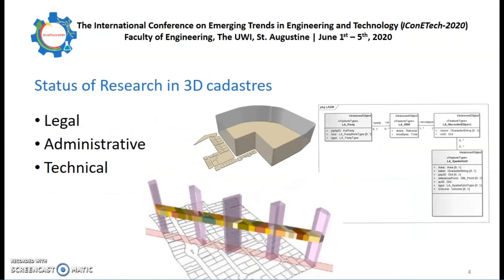Research on 3D cadastres may be separated into three streams: legal, administrative, and technical. Legally, cadastral parcels have always been described as extending from the center of the Earth to the infinite sky, which effectively makes them 3D. Practical considerations and land use restrictions, as well as international treaties, ensure that the whole of this described volume of space is not claimed, occupied, or used — so no, you cannot charge airplanes a fee for flying over your house.